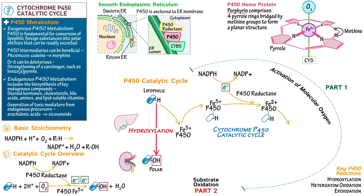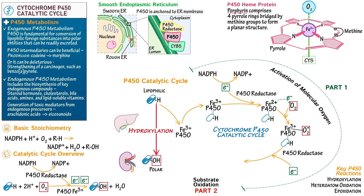Molecular oxygen then binds to the iron. In the process, an electron is transferred from the iron to the oxygen — iron is oxidized back to its 3-plus state and oxygen becomes negatively charged. Next, another electron is transferred to the enzyme, which can occur either via another P450 reductase reaction or via a lesser-discussed enzyme, cytochrome B5.